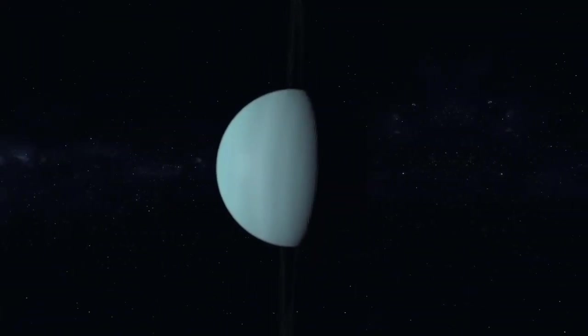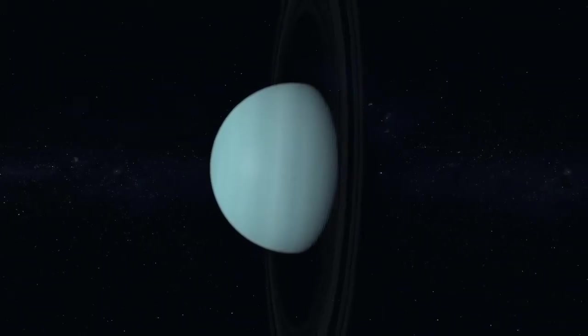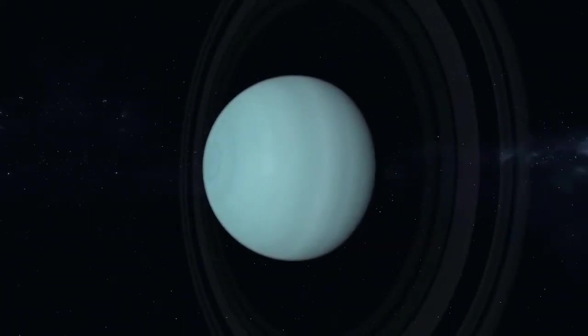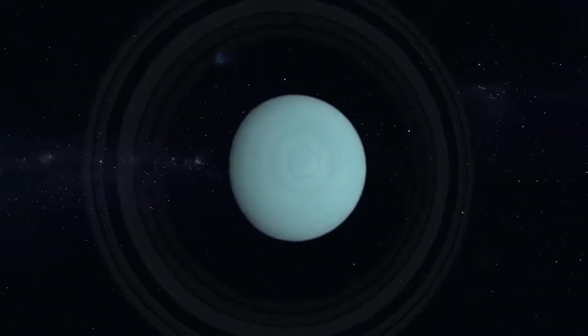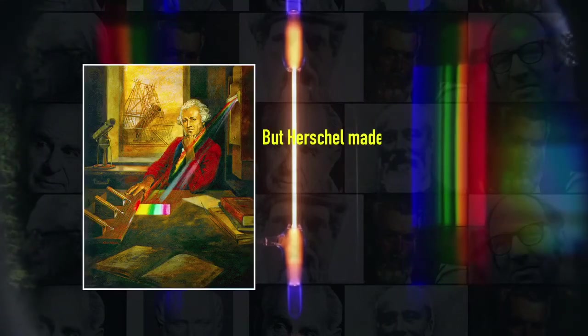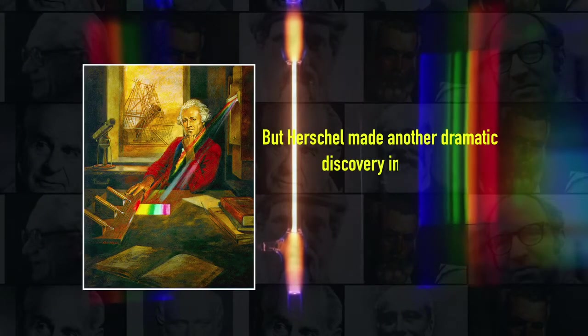Herschel is famous for his discovery of the planet Uranus in 1781, the first new planet discovered in the modern era. But Herschel made another dramatic discovery in 1800.